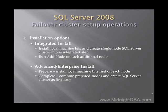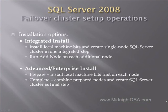The two options available: one is called integrated install, where you install a single-node SQL Server cluster — install all the local machine bits on a single node, followed by running add node from each of the other nodes to form a full cluster. The integrated install is the most commonly used way. There is also an advanced or enterprise install, where you first prepare each node individually, then complete a second phase which makes the cluster ready and available.